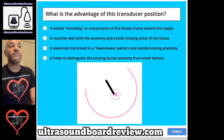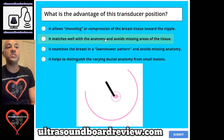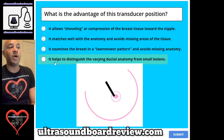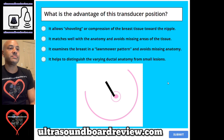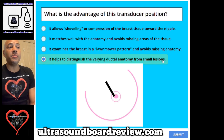Question 60. What is the advantage of this transducer position? A. It allows shoveling or compression of the breast tissue toward the nipple. B. It matches well with the anatomy and avoids missing areas of the tissue. C. It examines the breast in a lawnmower pattern and avoids missing anatomy. D. It helps to distinguish the varying ductal anatomy from small lesions. The answer is D — it helps to distinguish the varying ductal anatomy from small lesions.